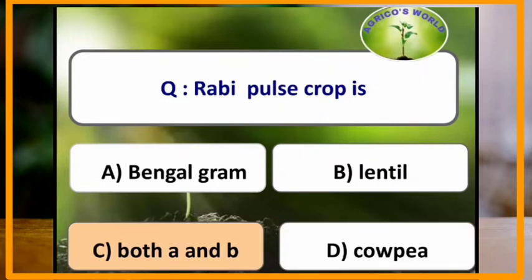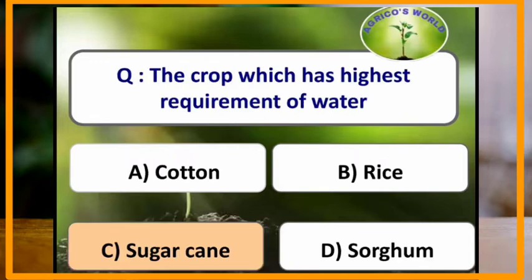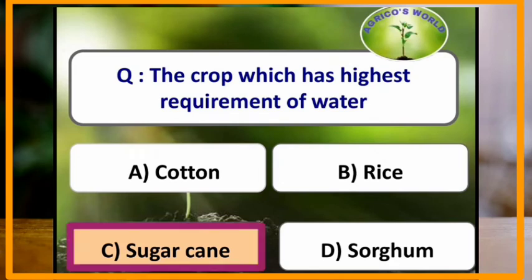Rabi pulse crops are Bengalgram and lentil. The crop which has the highest water requirement is sugarcane.